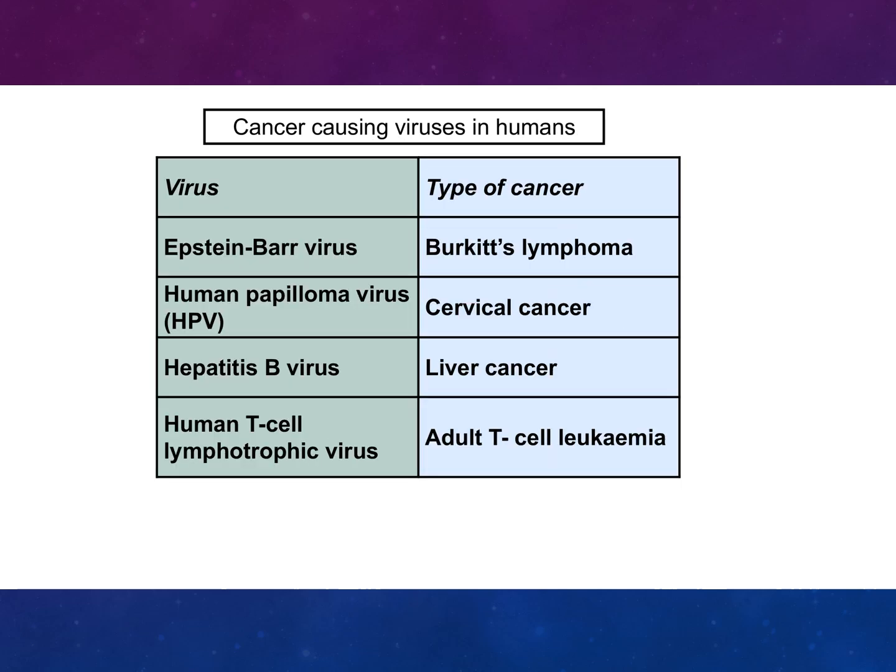Cancer-causing viruses in humans include the Epstein-Barr virus, which results in Burkitt's lymphoma; human papilloma virus, which results in cervical cancer; hepatitis B virus, which results in liver cancer; and human T-cell lymphotropic virus, which causes adult T-cell lymphoma.